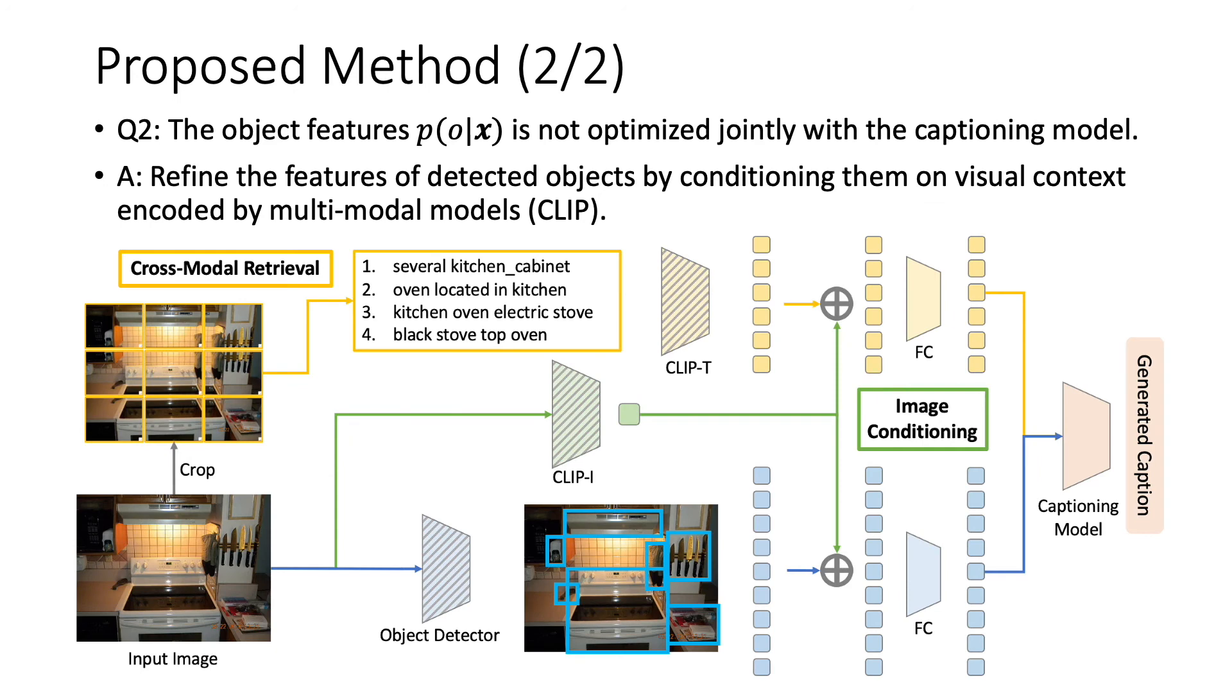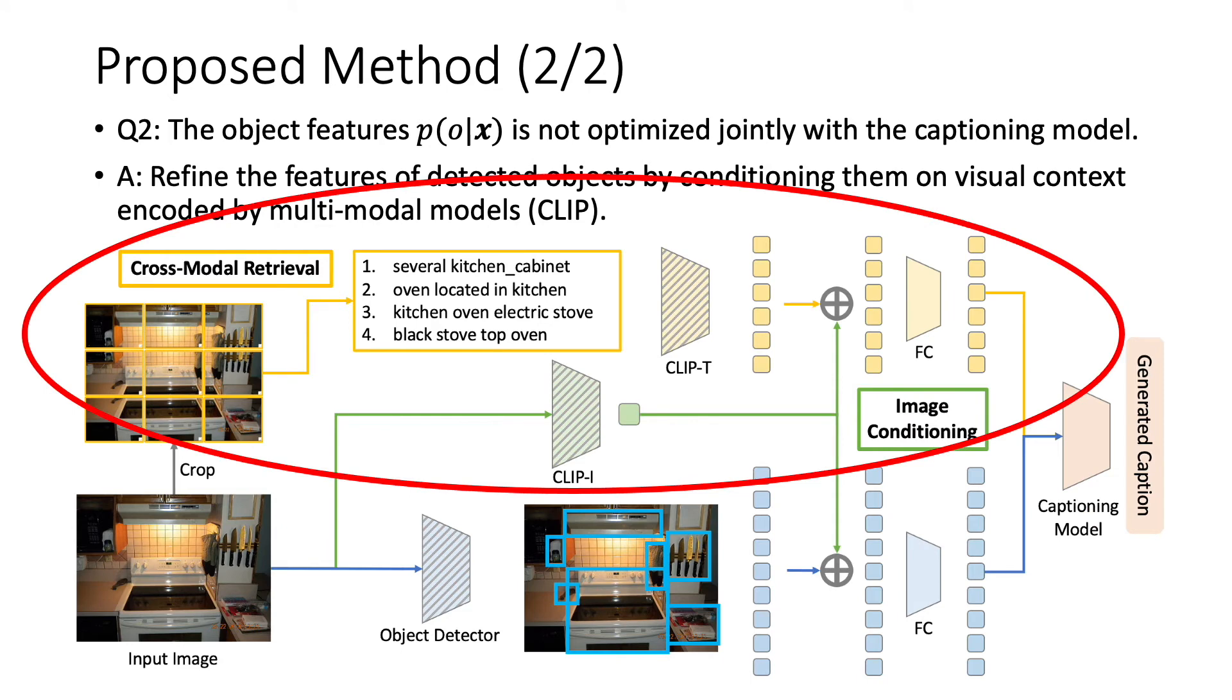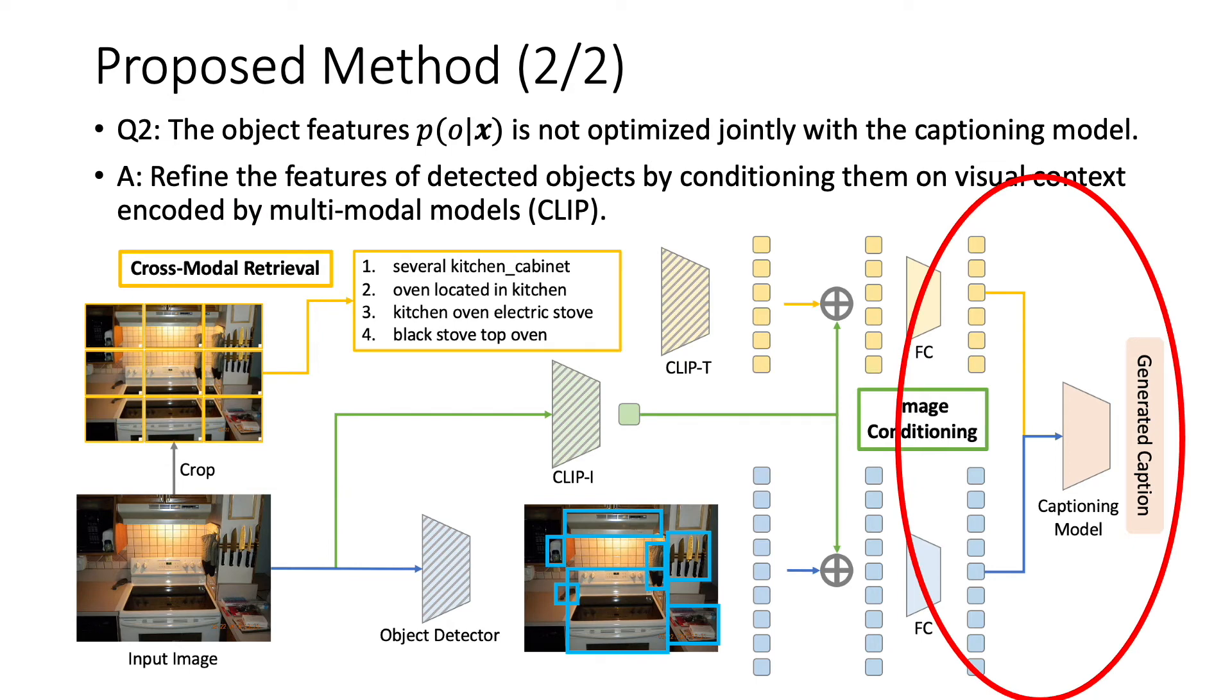To address the second issue, we propose to refine the object features by conditioning the features on the visual context encoded by the multi-modal CLIP model. As shown in the figure below, the input image is first encoded by the image branch of the CLIP model. The image feature is then concatenated with the object feature, and then an FC layer is applied to refine the object feature before sending it into the captioning model. Similarly, the textual context is first encoded by the text branch of the CLIP model, and then refined by the image feature before sending it into the captioning model. The textual context and the detected objects are then concatenated along the sequence dimension into a long sequence. The concatenated sequence is then fed into the captioning model for caption generation.